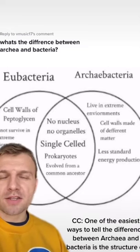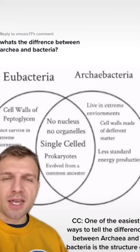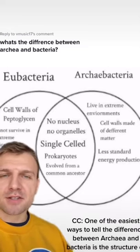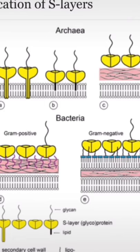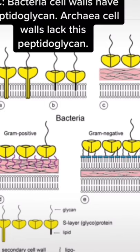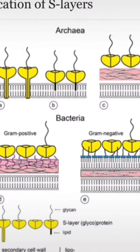One of the easiest ways to tell the difference between archaea and bacteria is the structure of their cell wall. The cell walls of bacteria contain a substance called peptidoglycan, while the cell walls of archaea lack that peptidoglycan.